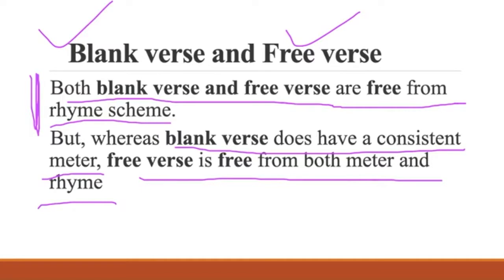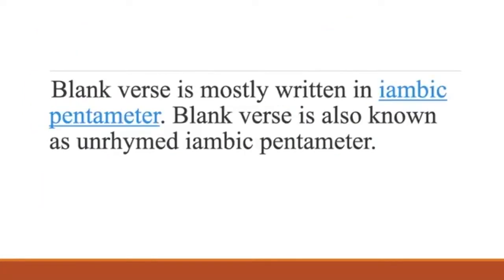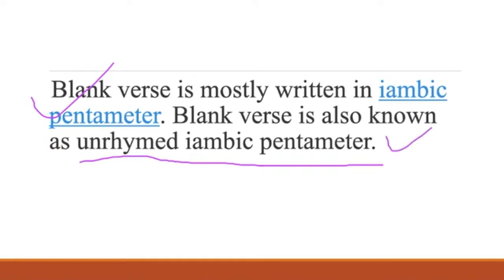Blank verse is mostly written in iambic pentameter — you can say that an unrhymed iambic pentameter line is known as blank verse. One meter is used in blank verse and that meter is iambic pentameter, but it is unrhymed, meaning no rhyme pattern is used. Earlier in formal verses, rhyme schemes were present — for example a-b-a-b or a-a-b-b — where the first line rhymed with the second, or first with third. That was the pattern followed in formal verses.